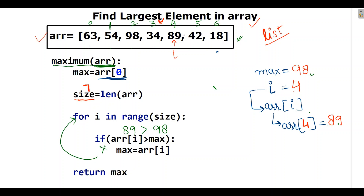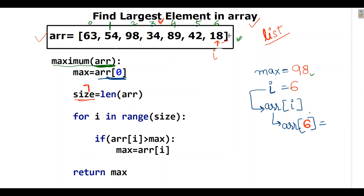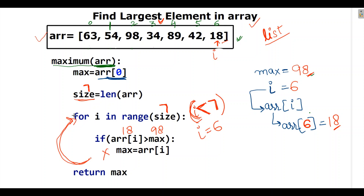For index 5, ARR[5] is 42. Is 42 greater than 98? No. The loop continues to index 6, where ARR[6] is 18. Is 18 greater than 98? No. When the loop tries to proceed to the 7th index, there is no element, so it exits the loop and returns the max value, which is 98. So the largest value in the array is 98.